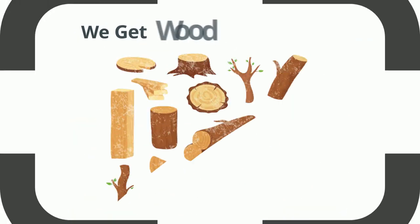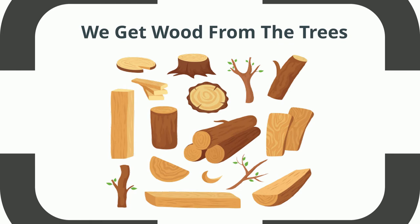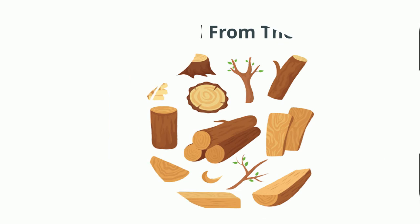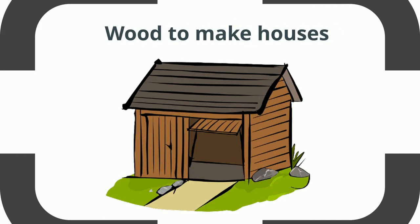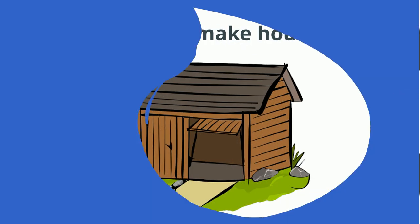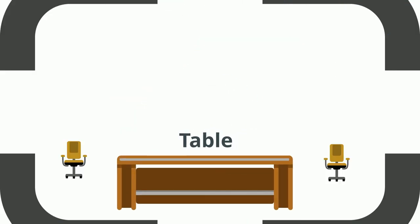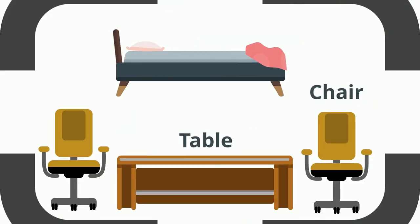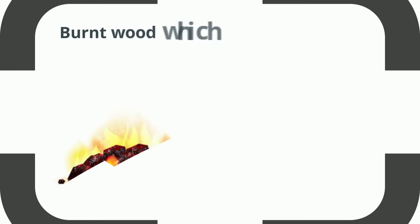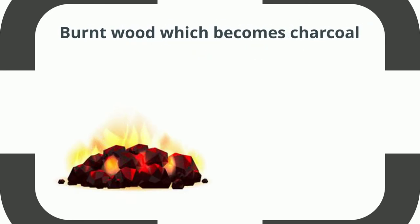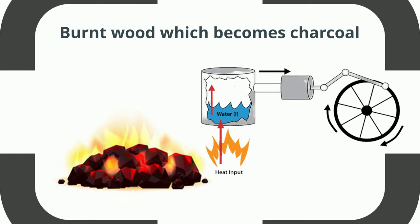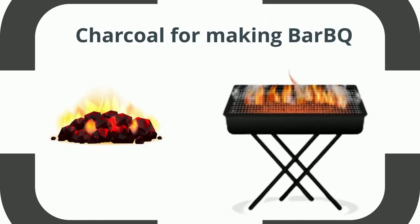We get wood from trees which is used for many purposes. For example, we use wood to make houses and everyday items of use such as tables, chairs, beds, etc. The burnt wood, which becomes charcoal, is also used as fuel for running different vehicles and machines. We also use charcoal for making barbecue.